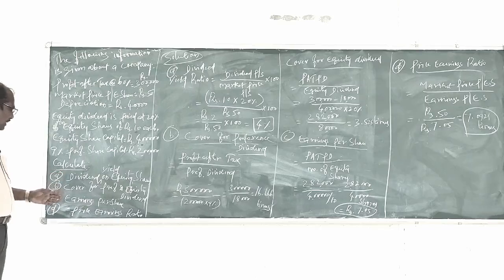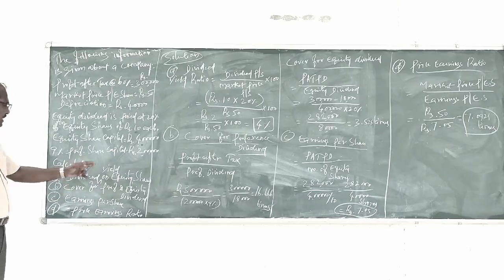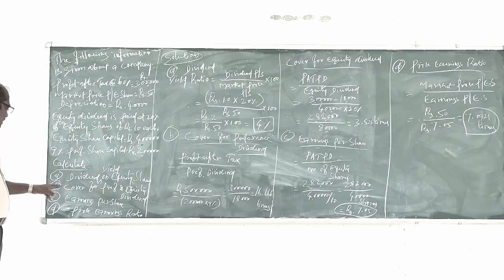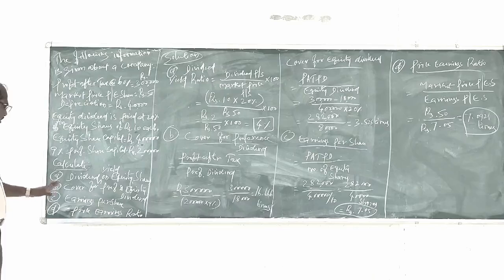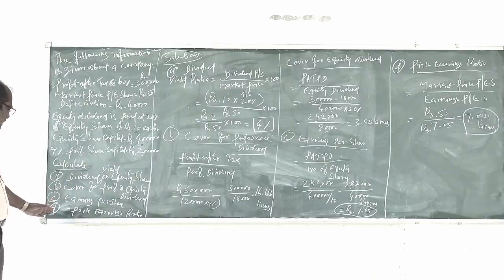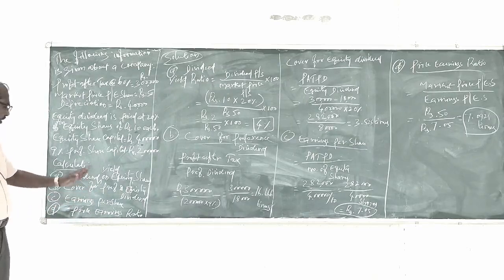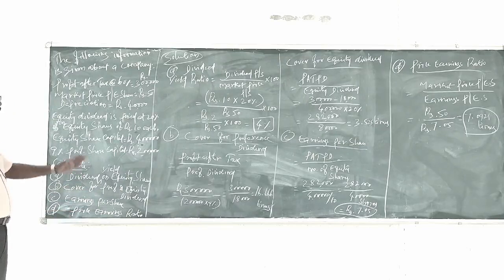We are asked to calculate: A. Dividend yield on equity shares. B. Cover for preference and equity dividend separately. C. Earnings per equity share. And D. Price earning ratio. These are all the four ratios to be calculated from these details.